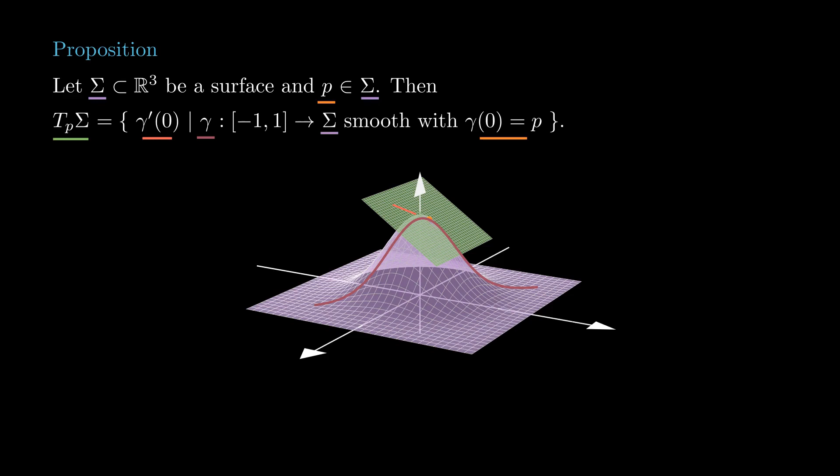Consider all smooth regular curves in sigma passing through p at time zero, then we take the set of all their velocity vectors at time zero. We claim that this set is precisely the tangent plane to sigma at p.